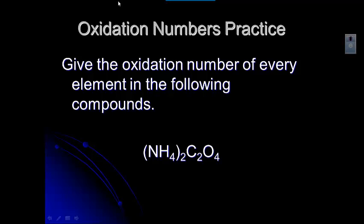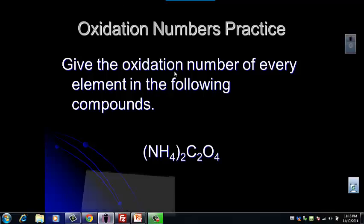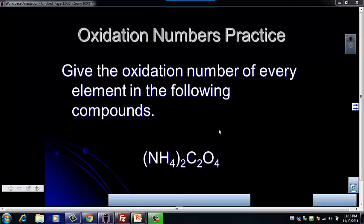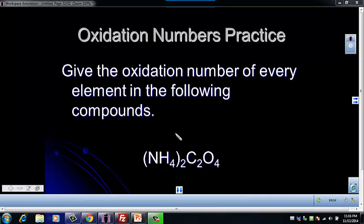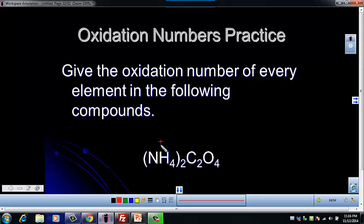Let's take a look at what we know from our rules. We don't really know anything about nitrogen, but we know that hydrogen is usually a positive one. We don't really know anything about carbon, but we know oxygen is usually a negative two.